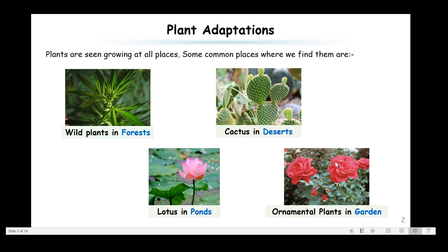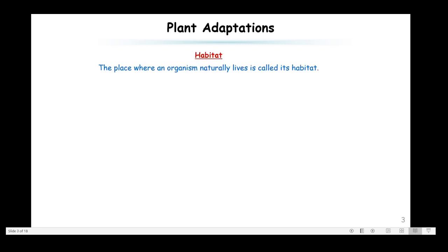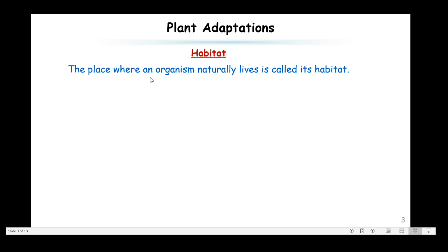Another thing to observe is that all plants are different from each other — they have different kinds of features. Before we switch over to the main part of this topic, let us understand a few terms. The first term is habitat. A habitat is a place where an organism naturally lives. For example, pine trees grow on mountains, so the mountain is the habitat of the pine tree. You can bring a pine tree to the plains, and it will survive there, but it will not grow to its full height.